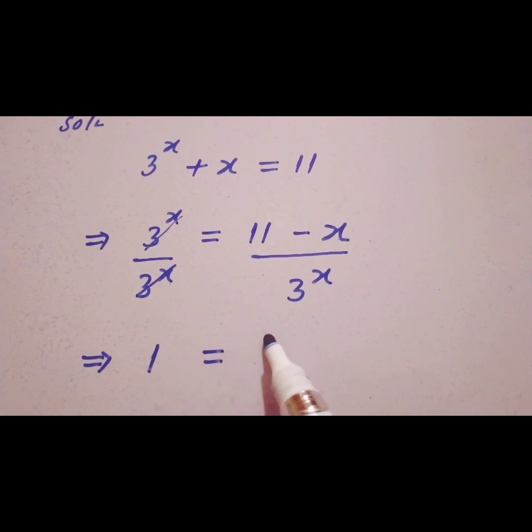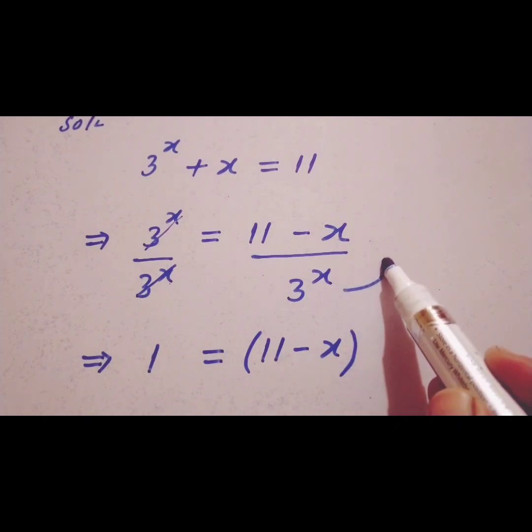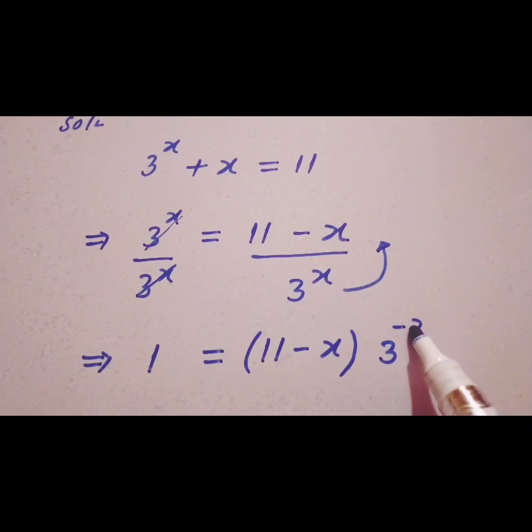This is equal to 11 minus x. When we move 3^x from denominator to numerator, it becomes 3^(-x). So 1 = (11 - x) × 3^(-x).